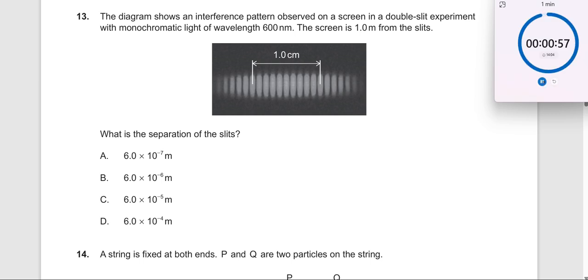The diagram shows an interference pattern observed on the screen in a double slit experiment. The monochromatic light of wavelength lambda is given to you, and the screen is capital D is given to you. What is the separation of the slits?